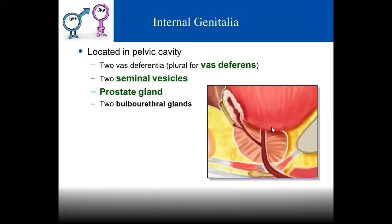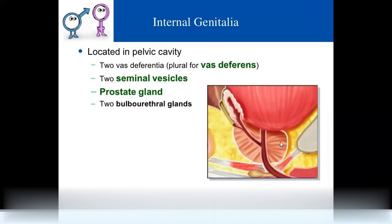The internal genitalia are located inside the body: two vas deferens, two seminal vesicles, one prostate gland — which is located just below the urinary bladder surrounding the urethra — and two bulbo-urethral glands.